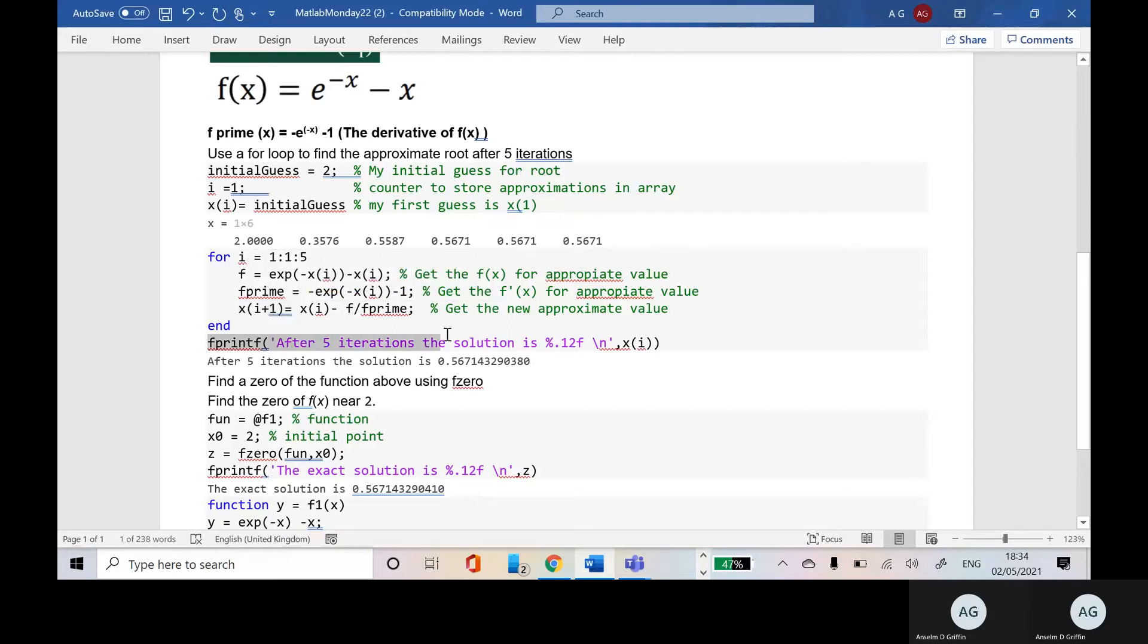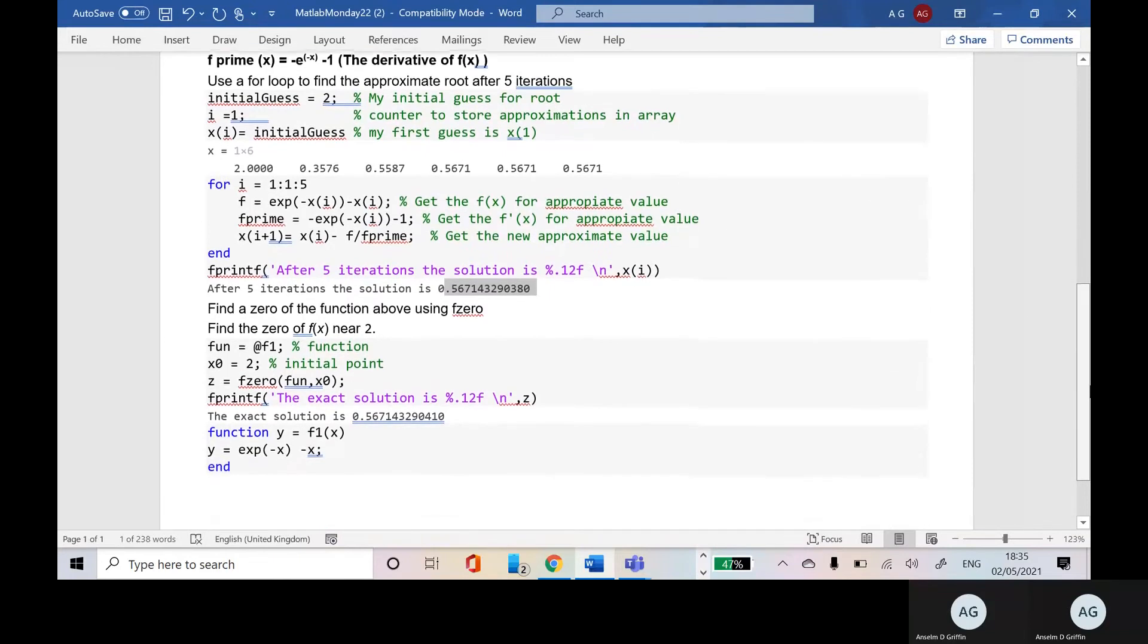There's my fprintf. I've printed it to 12 decimal places and there's the solution there. Now I wanted to see how I got on and compared it with the real value.